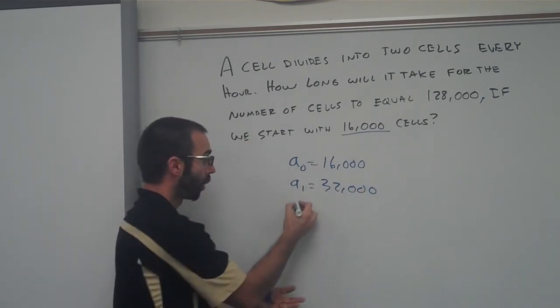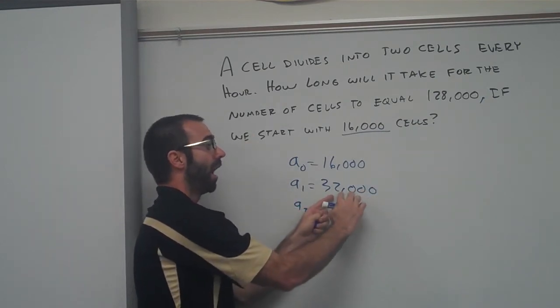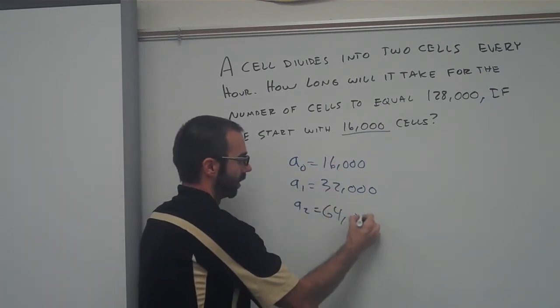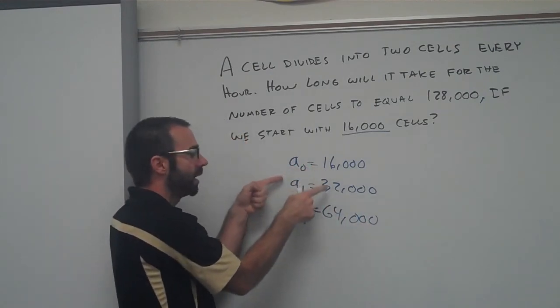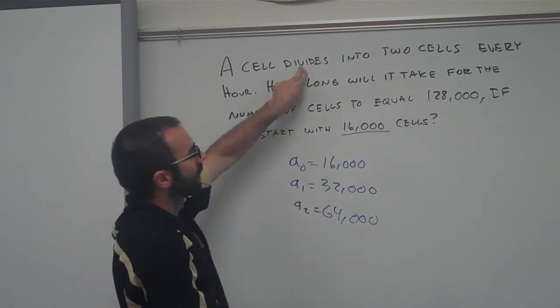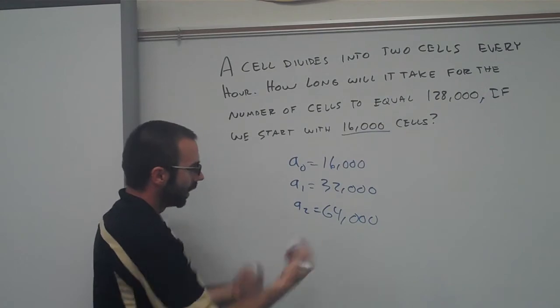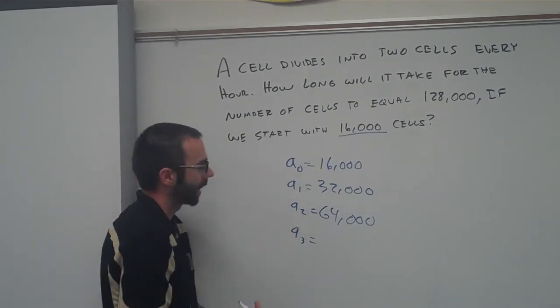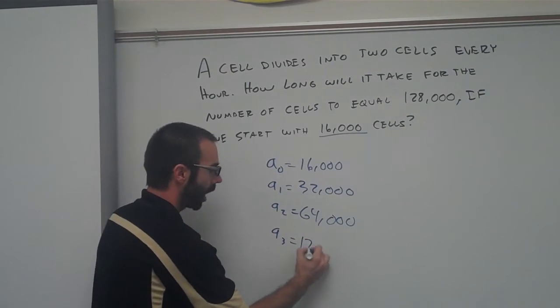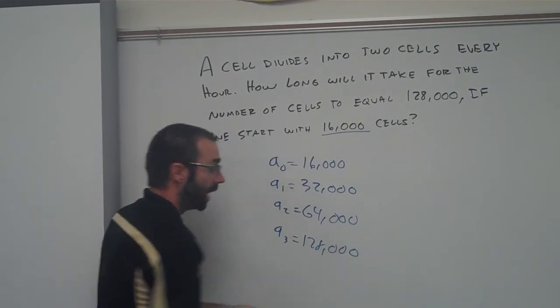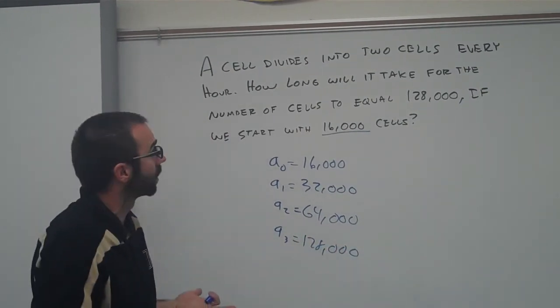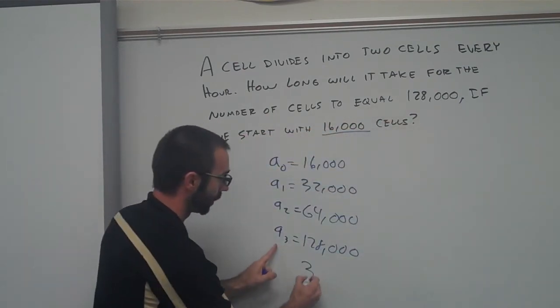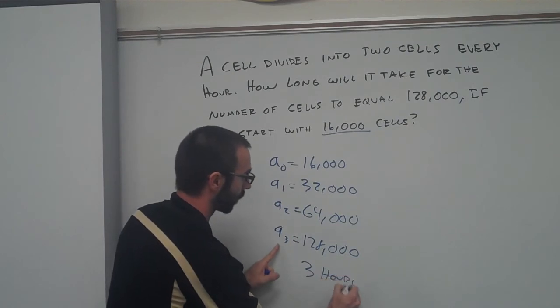And then hour two comes and now every cell here cuts in half, which also means doubles. So all we're doing is that we're doubling every single time. It's the same thing as saying that it divides into two. And then on the third hour, if I multiply that by two because it doubles, 128,000. So conceptually, we already have the answer. How long will it take to get to 128,000? Well, the answer is three. So it would take three hours.